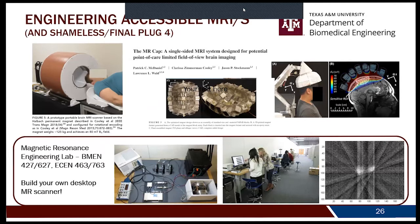Shameless plug number four: if you come to Texas A&M, you can take an MRI Engineering Lab course I helped develop where you build your own desktop MRI scanner. You're given a desktop magnet and then you build from scratch — your own RF coils, gradient coils, you code your own pulse sequences. Everything else is up to you. It's obviously the coolest class in the whole world.